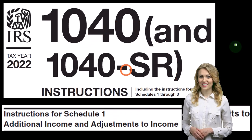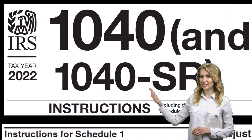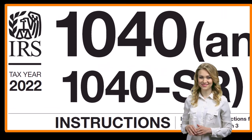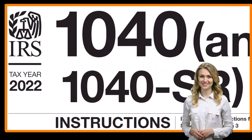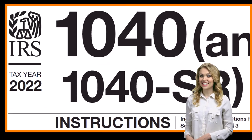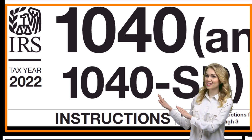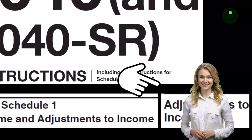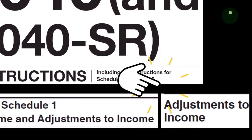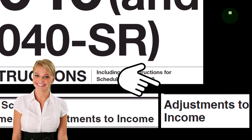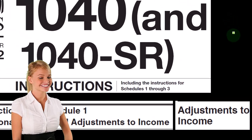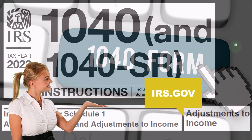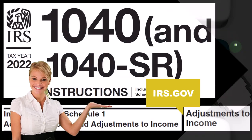Most of this information comes from the Form 1040 Instructions, Tax Year 2022, specifically the Instructions for Schedule 1 Additional Income and Adjustments to Income section, which you can find at the IRS website, irs.gov.